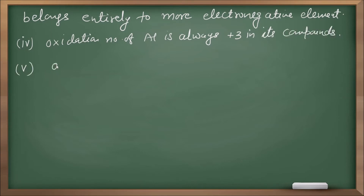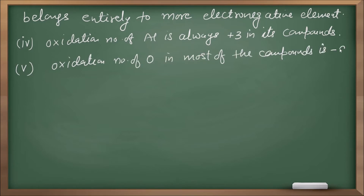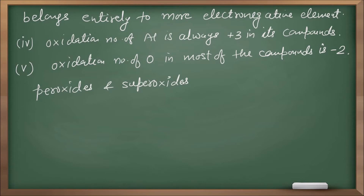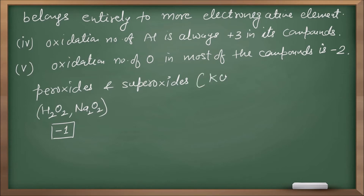The oxidation number of oxygen in most compounds is minus two, but there are a few exceptions. In peroxides like H2O2 or Na2O2, the oxidation number of oxygen is minus one.